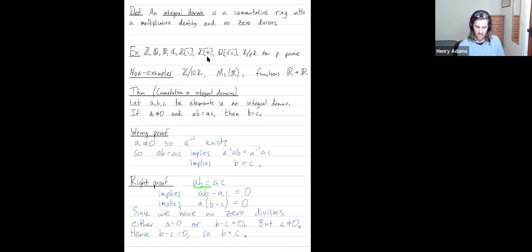We start with pretend ab equals ac with a non-zero. Subtract ac from both sides. Distribute on the left to get a times b minus c is equal to zero. We have no zero divisors. So either a is zero or b minus c is zero. As an assumption, we assumed a was non-zero. So therefore, b minus c is equal to zero. Or in other words, b is equal to c.